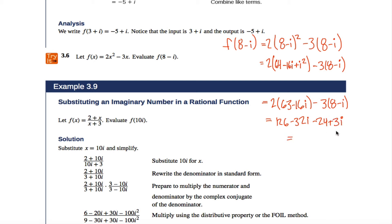And now if I combine like terms, I got 126 - 24, which nets out to 102, and I got -32i + 3i which nets out to -29i. What I have is something in a + bi form. So I'm as simple as I can be, and I'm done with 3.6.